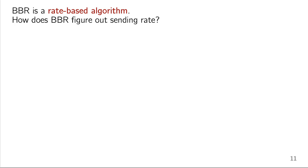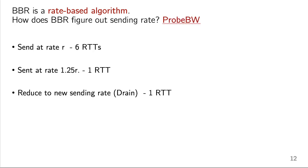BBR is intended to be a rate-based algorithm. It wants to figure out exactly how much available bandwidth is its fair share and send packets at that rate. So how does BBR figure out its sending rate? Well, in steady state, it uses a mechanism called probe bandwidth. So BBR is basically going to send at what it currently thinks is the maximum throughput it can get, let's say that's a rate R, for six RTTs.